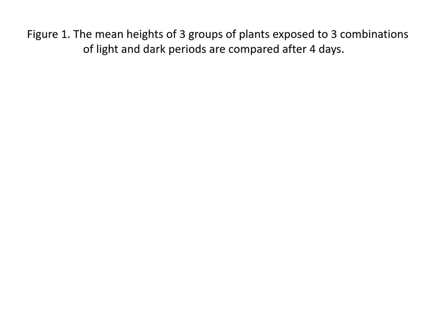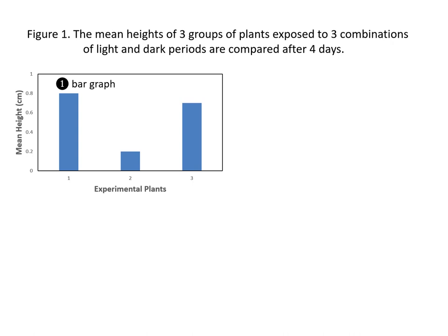I would like to show you a hypothetical dataset which gives the mean heights of three groups of plants that were exposed to three combinations of light and dark periods, measured after four days. There are three groups of plants and three combinations of light and dark periods, so I will show you the data in different graph forms. First, we have the bar graph — group one has the highest mean height, and group two is the shortest.